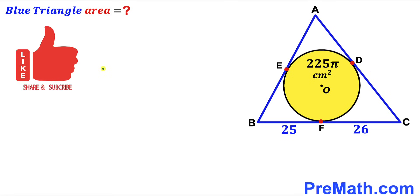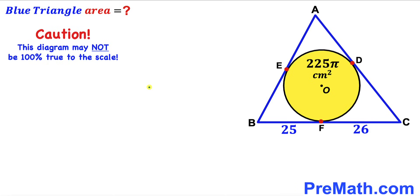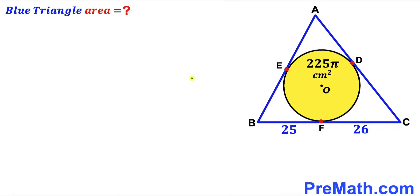Please give a thumbs up and subscribe, and keep in mind that this figure may not be 100% true to scale. Let's get started. Our very first step is to calculate the radius of this yellow shaded circle. Let's recall the area of a circle formula: Area = πr², where lowercase r is the radius of the yellow circle.